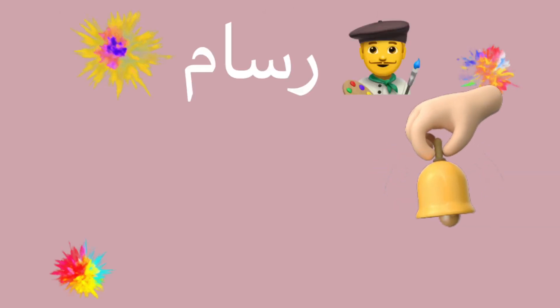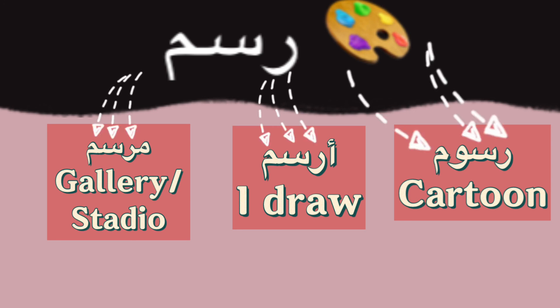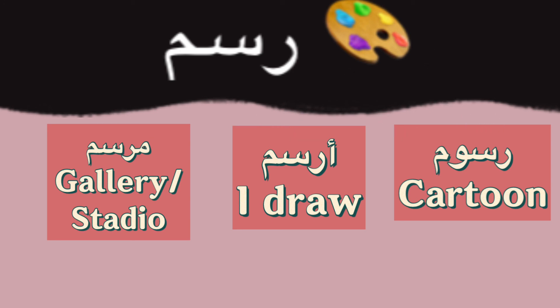For example, the word 'rassam' means 'artist.' It is a modified word that comes from the root 'rasam,' which means 'to draw.' From this one root word, you can modify it into many other words — for example, 'russum,' 'rassam,' 'mersam' — all of these words originate from 'rassam.' And that's how Arabic works.